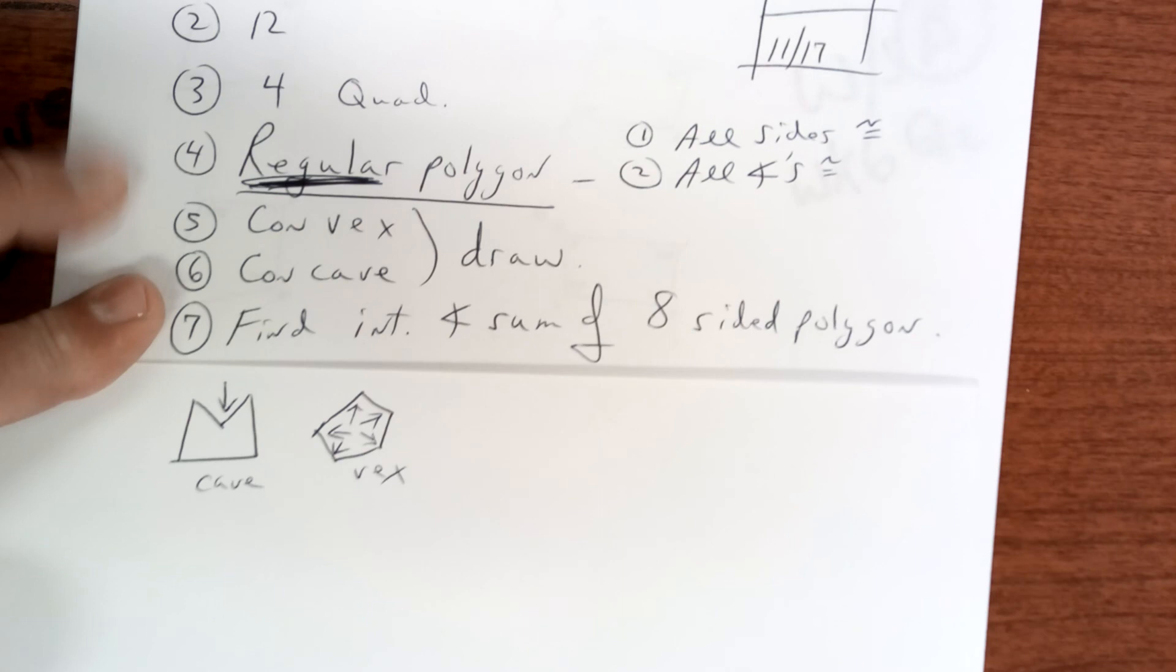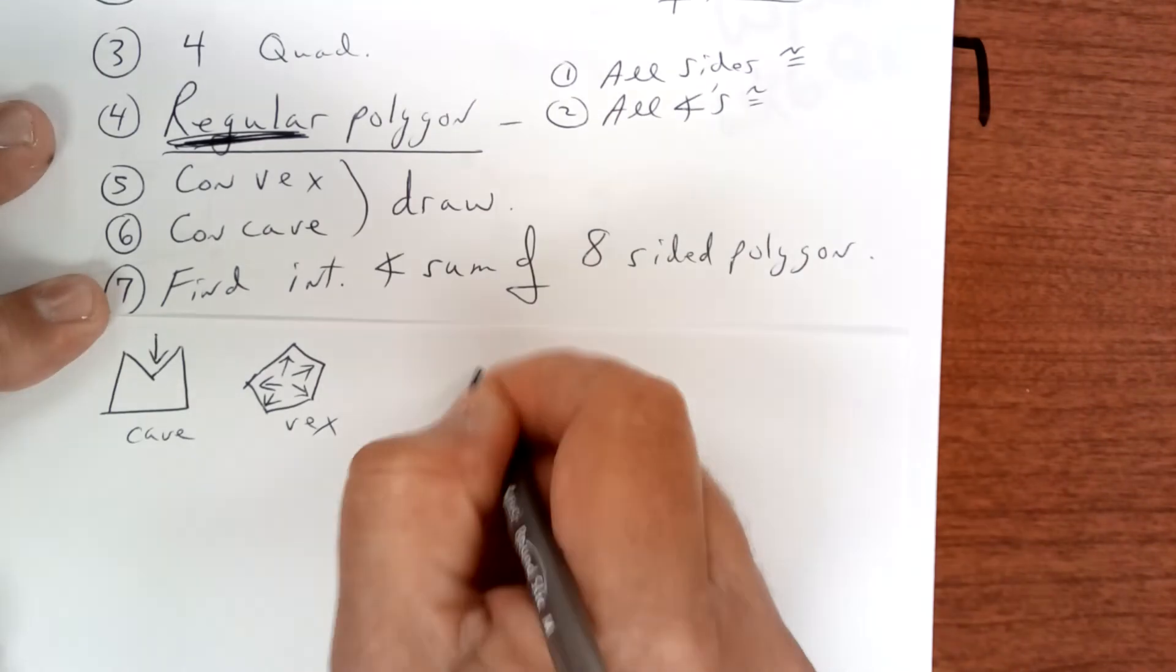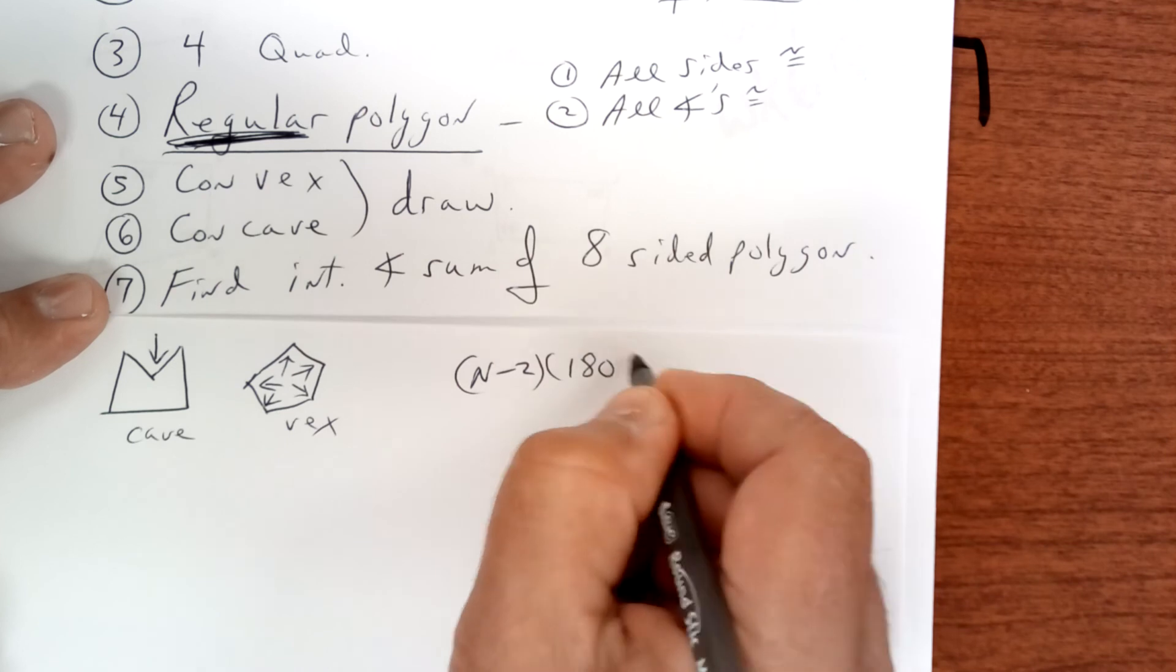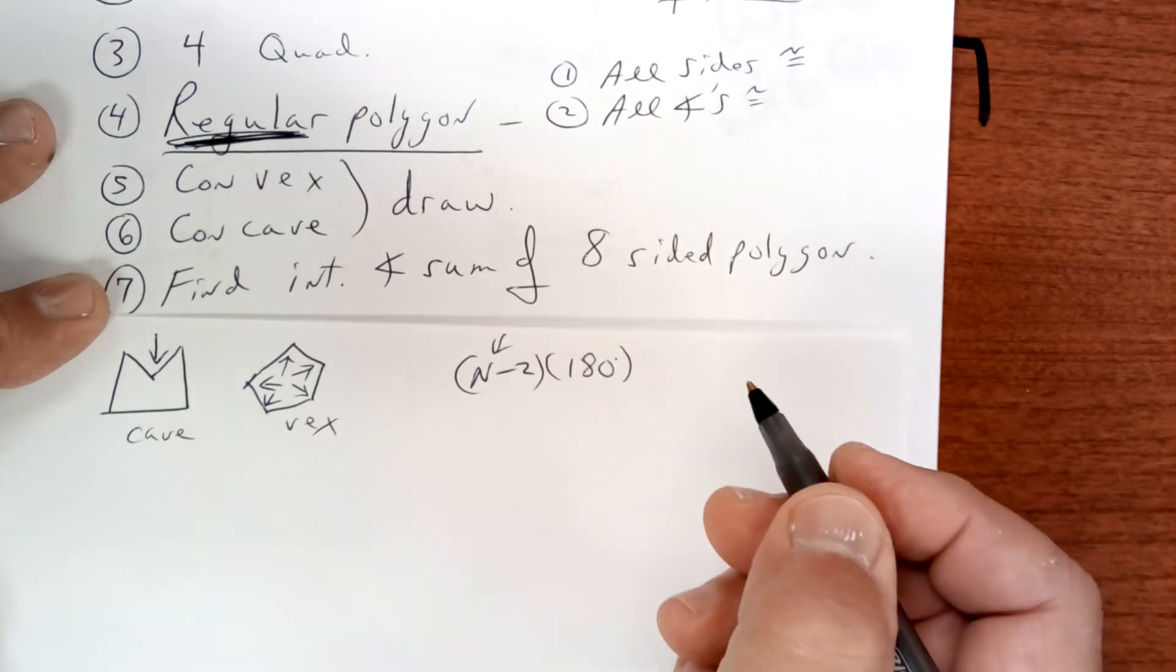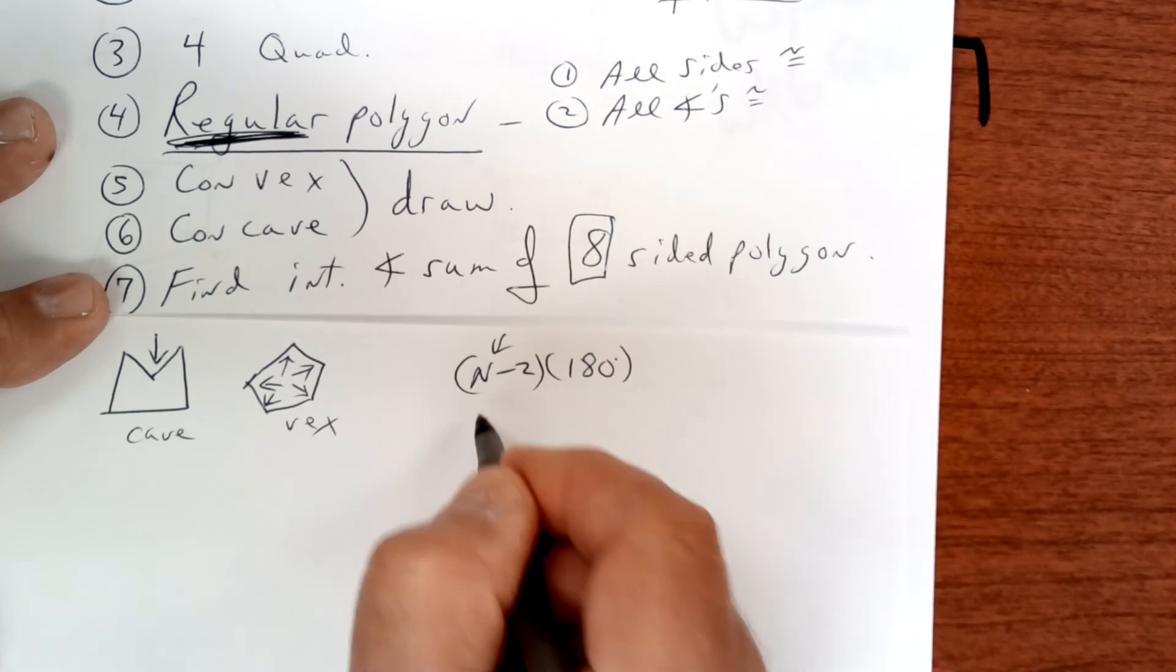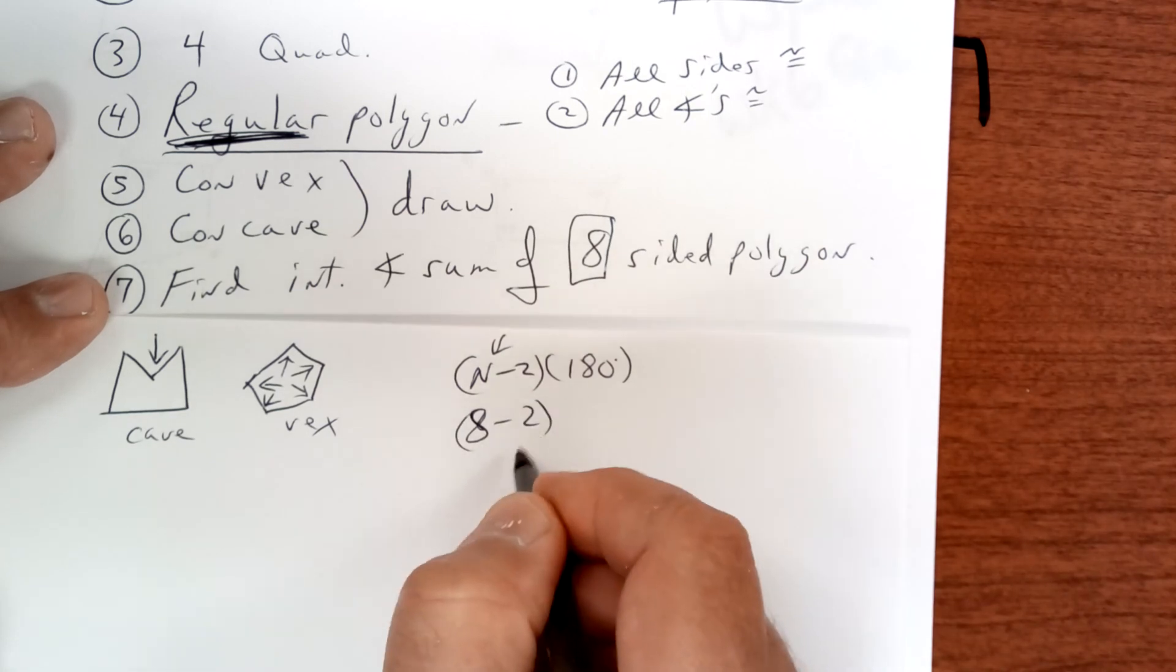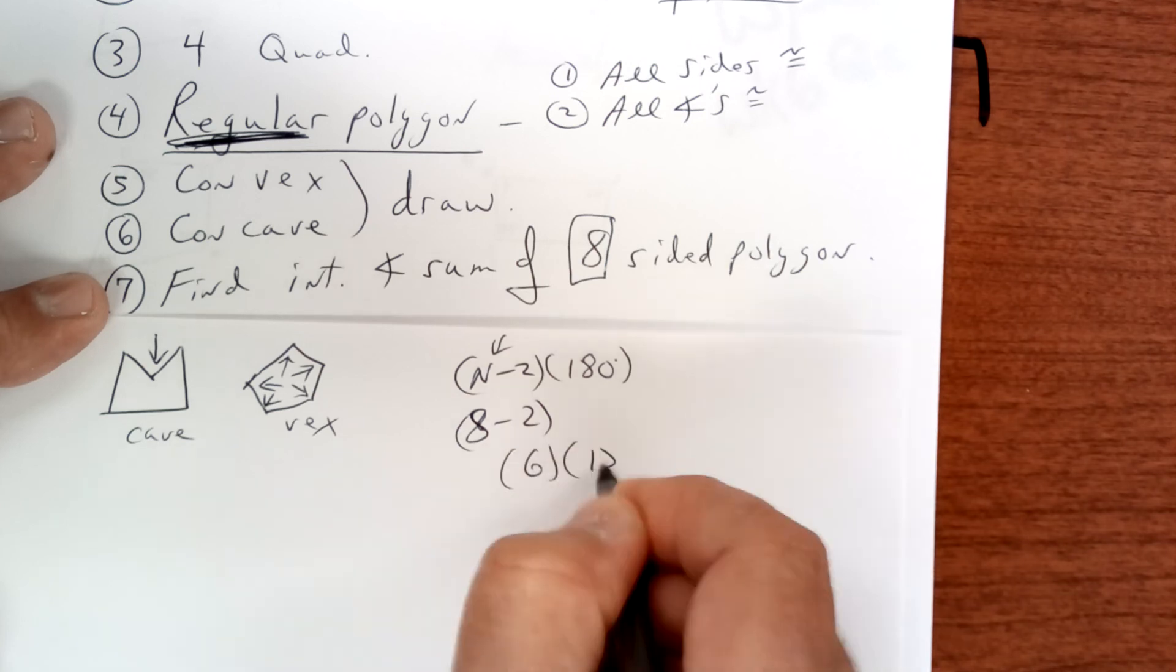Find the interior sum of an eight-sided figure. Well, it's n minus two times 180. Do you know what n represents? That's correct, the number of sides. And there are eight, so that's going to be six triangles.